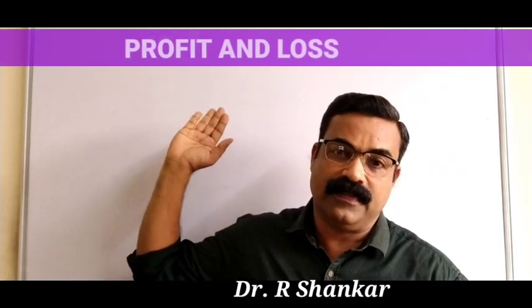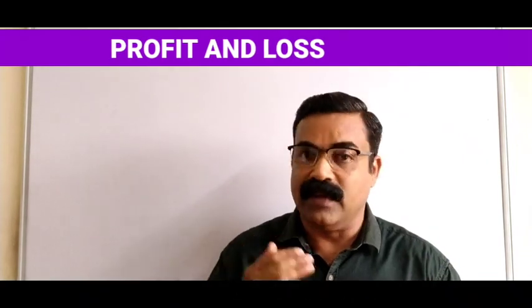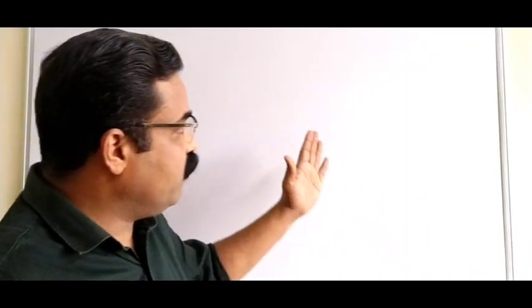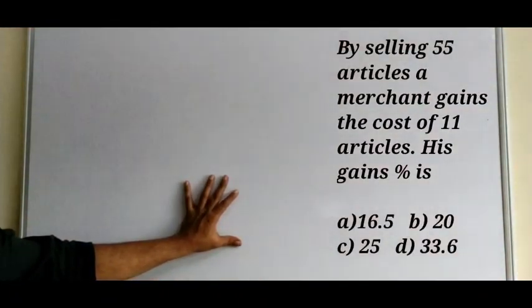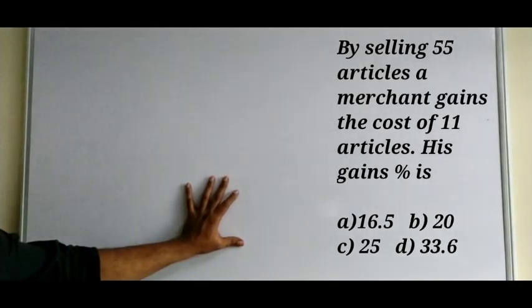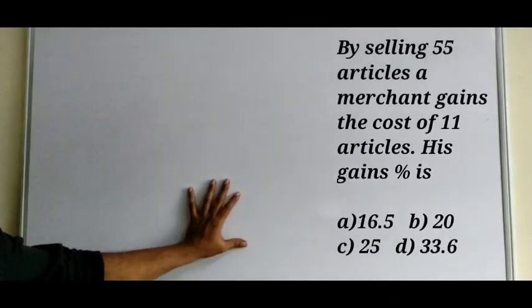Today I have selected the topic profit and loss. We will be solving some selected important questions from this topic. Here is your first question on the board: by selling 55 articles, a merchant gains the cost of 11 articles. His gain percentage is — four options are also given to you, and you have to find out what is his gain percentage.